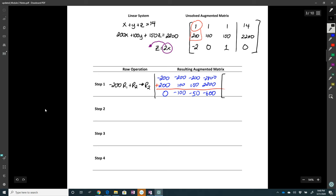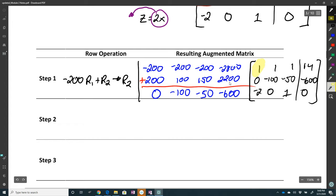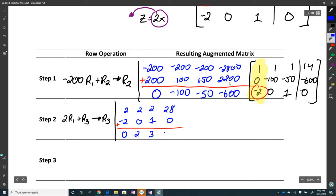And so that's my new matrix. So I have 1, 1, 1, 14, 0, negative 100, negative 50, negative 600, negative 2, 0, 1, 0. Now, remember, we're going through column 1 first. And so I can get the negative 2 out of the way. Column 1, so I use a row 1. So 2 row 1 plus row 3 is my new row 3. 2, 2, 2, 2, 28, negative 2, 0, 1, 0. I can add those up. So I can add 0, 2, 3, 28, and that becomes my new matrix.